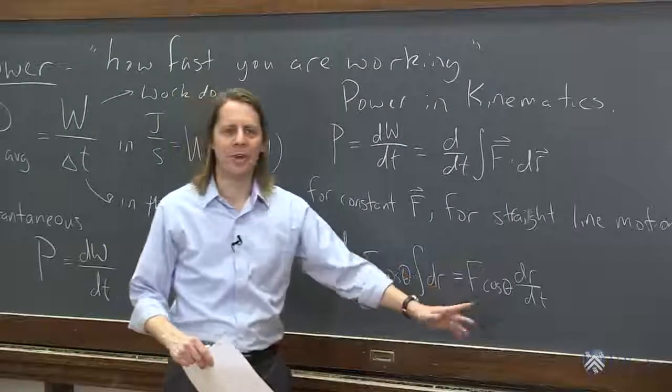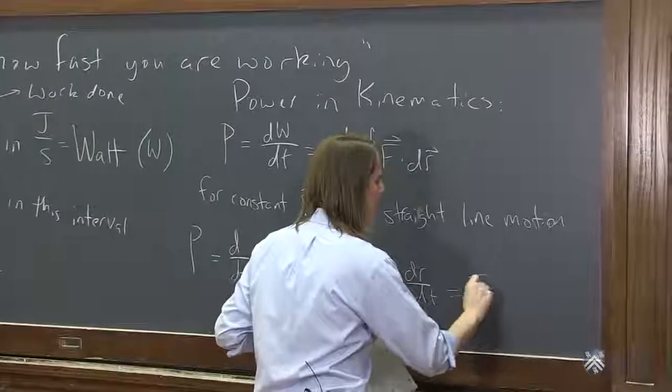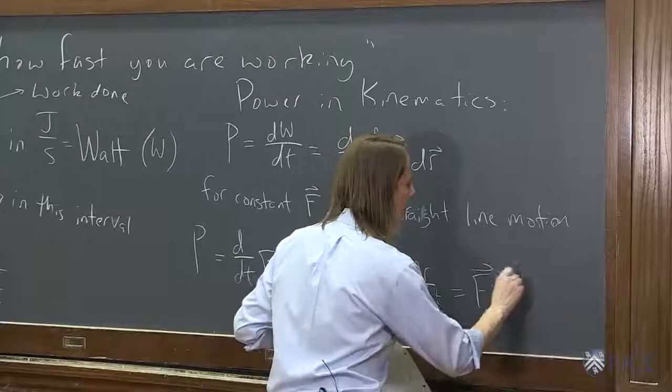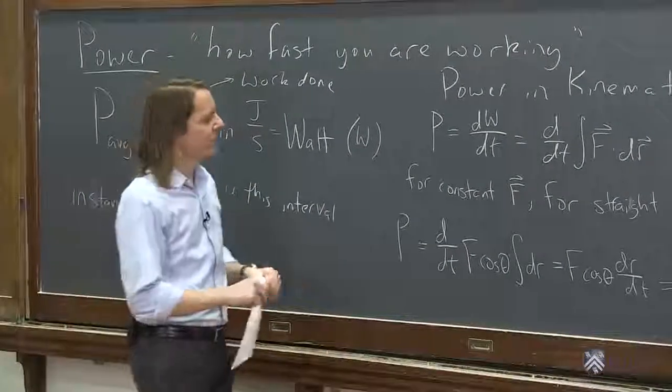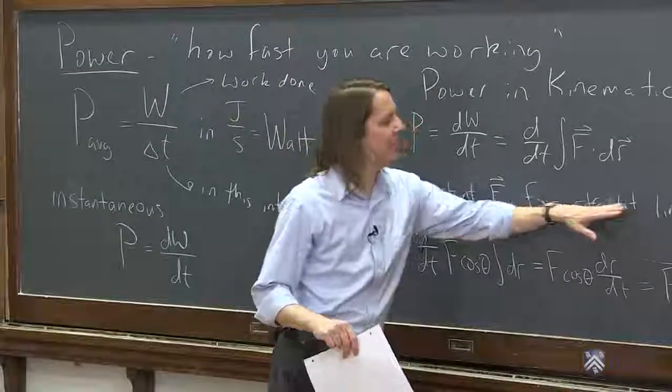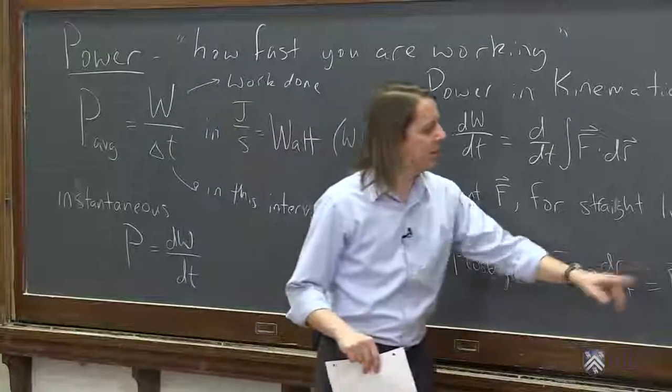So you could say this is f cosine theta v. But you realize that's the dot product. So now we can make it back, make it general again, and say, basically, the instantaneous work is the dot product of force and velocity. So now we've gotten away from these approximations, actually. At any time, the instantaneous power, I meant to say, is f dot v.